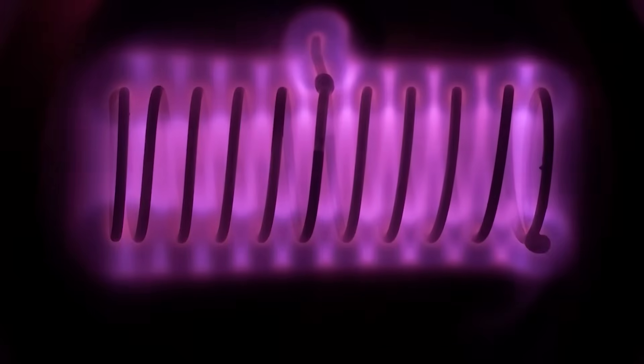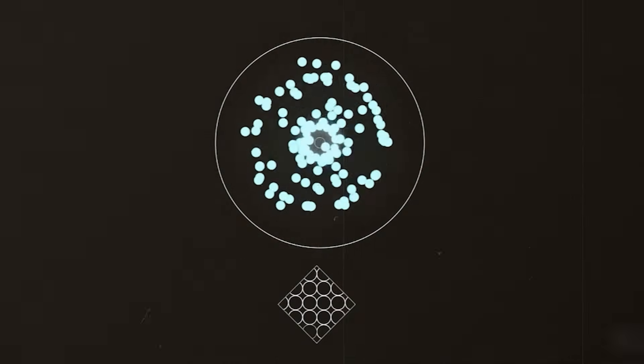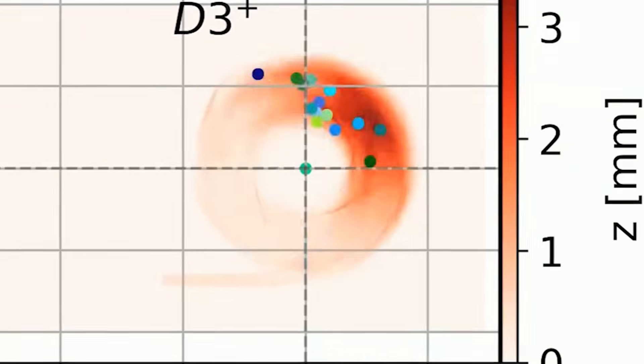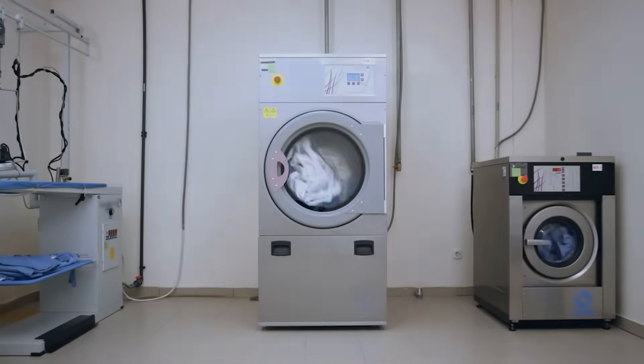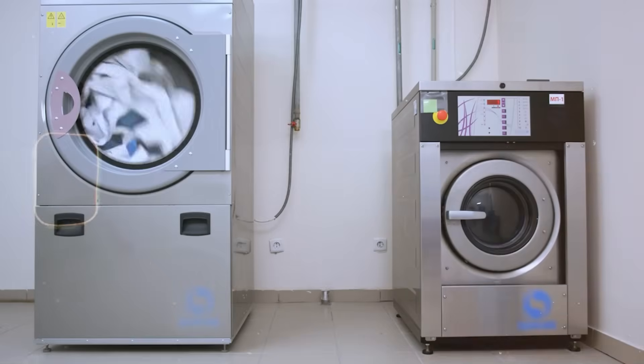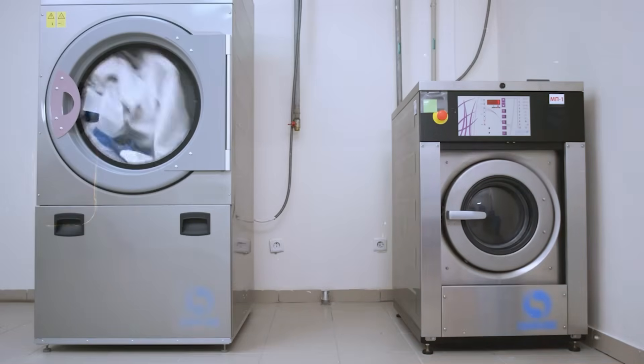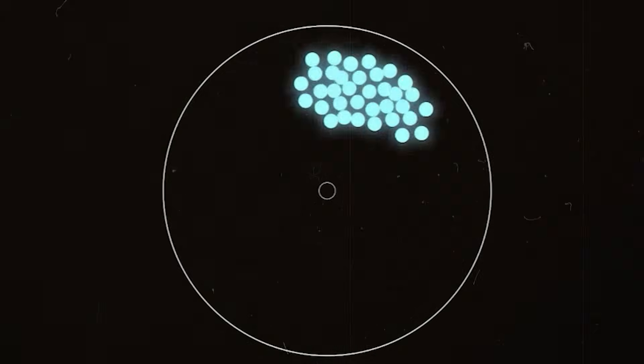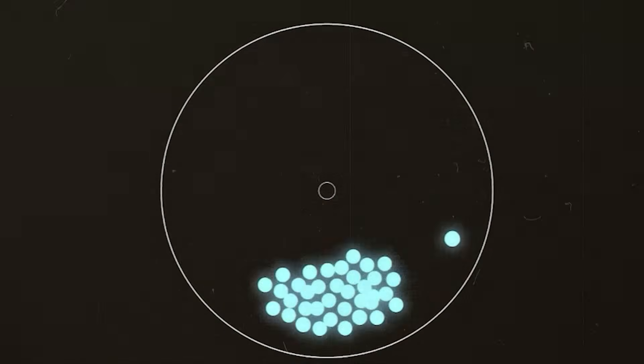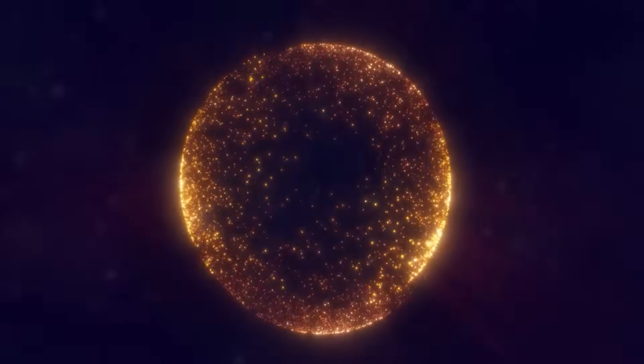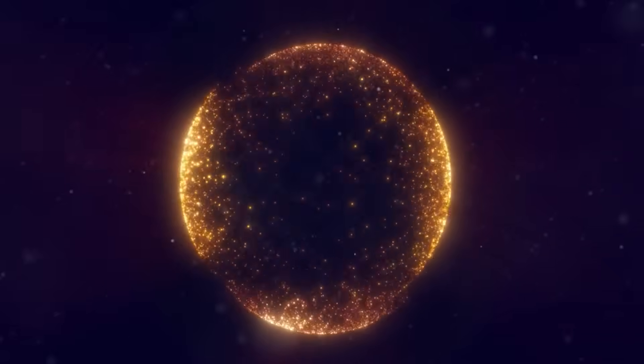When they pushed for higher density, an instability appeared. A rotating mode. They compared it to a washing machine. Clothes clump on one side, rotate, and the whole machine shakes. In their plasma, that clump meant particles slammed into the wall. The plasma leaked out instead of building up.